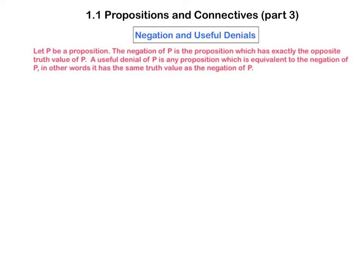If P is a proposition, then we studied something about the negation of P in the previous video. The term useful denial of P refers to any proposition that is equivalent to the negation of P. In other words, it has the same truth value as the negation of P.